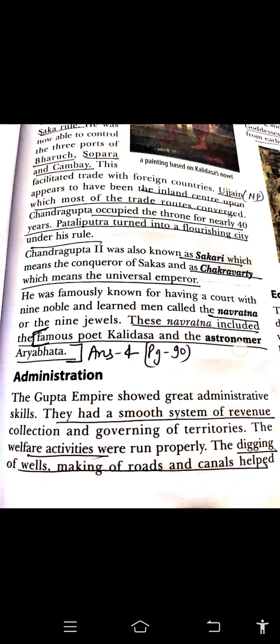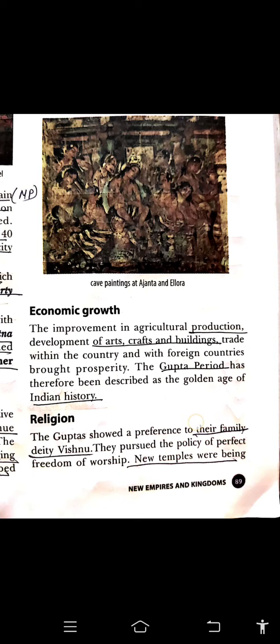We have already read about the administration. The Gupta Empire had a smooth system of revenue collection and governing of territories. Welfare activities included digging of wells, making of roads and canals, which helped improve agriculture and related trades. Science and literature flourished, and art developed in the Ajanta and Ellora caves. Economic growth, improvement in agricultural production, development of art, craft, and buildings, and trade within the country and with foreign countries brought prosperity. The Gupta period has therefore been described as a golden age of Indian history.